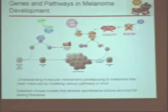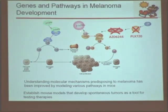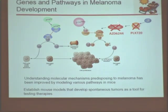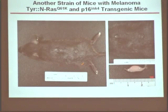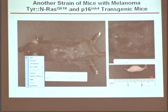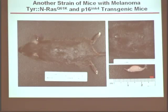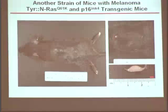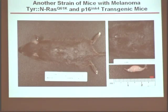Now we have these mouse models, and we take the mutations that we introduce in mice — and I'm going to show you what it looks like. This is an example of a mouse that Andre, who is sitting here, has helped generate. You see that this mouse has melanoma here and here, and this is a close-up of melanoma in these mice. You see a piece of skin where melanoma has developed and spread into surrounding tissue.